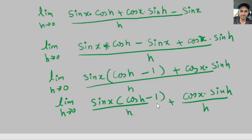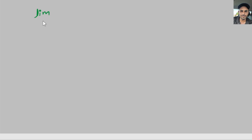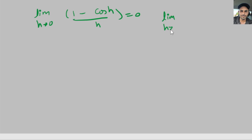Now there are a couple of properties we need to know to solve these limits. So I'm going to write those down. The limit as h goes to 0 of (1 minus cosine of h) over h equals 0, and the limit as h goes to 0 of sine of h over h equals 1.